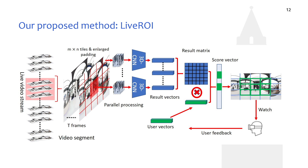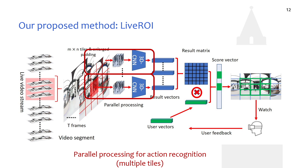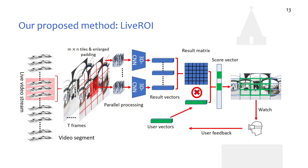Action recognition for one tile with the 3D-CNN model can achieve real-time performance. However, doing this for every tile would introduce huge delays and fail to meet real-time requirements. To solve this, we use a multi-thread strategy, since action recognition per tile is independent. By using multi-threading, we benefit from multi-processor resources for parallel processing and further reduce overall processing overhead. We assign the action recognition task for each tile to one independent thread with an identical 3D-CNN model.